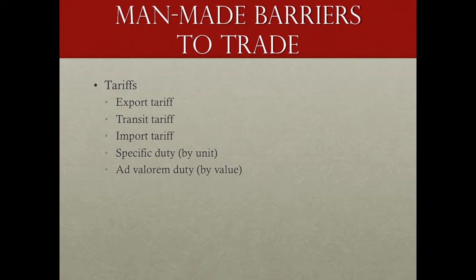We can formulate tariffs on the basis of a specific duty — a per-unit value — or an ad valorem duty, which is by total value. A specific duty means, for example, importing automobiles into the United States: every car has a $100 tariff, $100 per unit. Ad valorem duty recognizes there's a big difference between a Toyota Camry and a high-end BMW. A lower-value car is charged a percentage of its value, resulting in a lower tariff, while a high-value car has the same percentage but results in a larger absolute tariff. So ad valorem duty is as a percentage of value; specific duty is per unit.